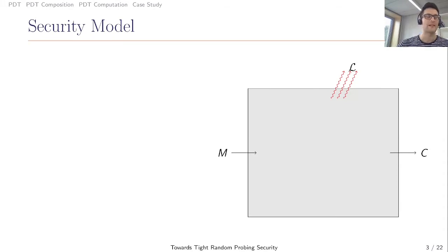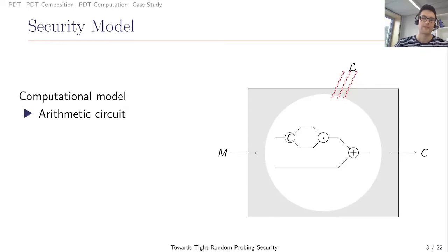To define our security model, we first have to decide on our computational model. Here we use the arithmetic circuit, where each operation is described as a gate and all values are carried by wires. The advantage of this model is that also the internal values are carried by wires.